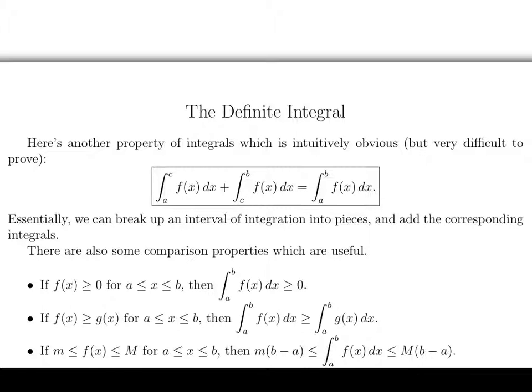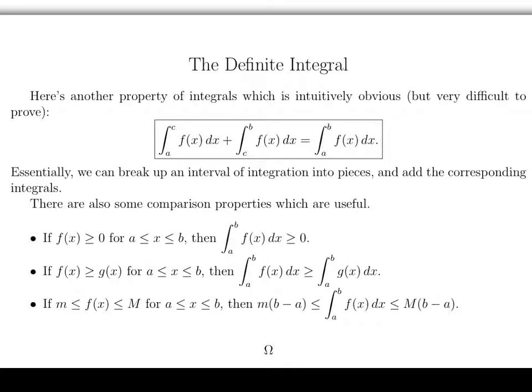More specifically, if a function is bounded below by little m and above by big M, then the integral will be bounded above and below. The lower bound will be little m times b minus a, and the upper bound is big M times b minus a. We'll use these sort of bounds from time to time.